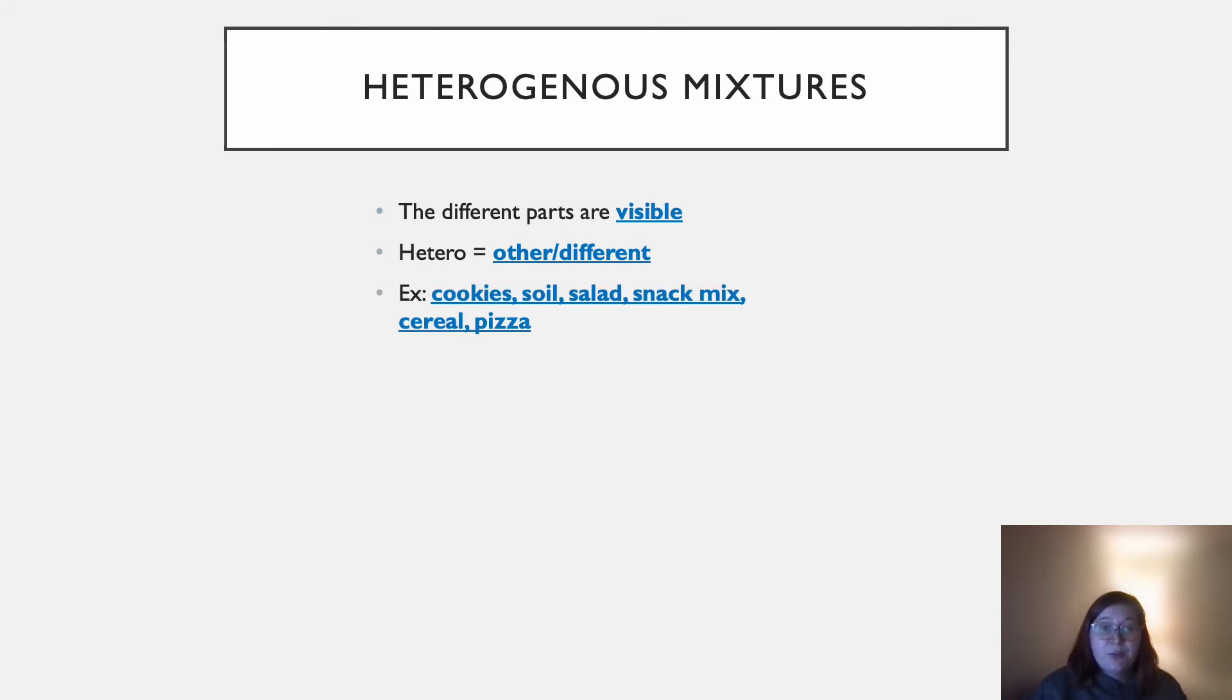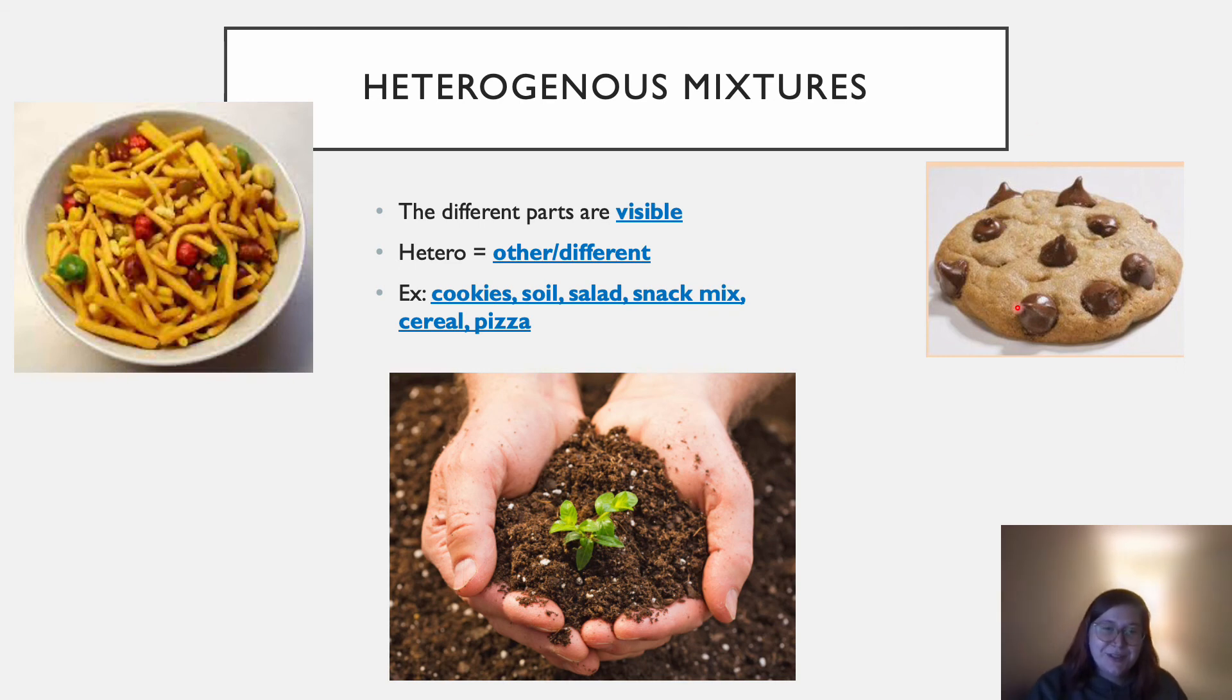So for example, cookies, you can see the chocolate chips in this cookie. Something like soil. If you look closely, you can see that it has little rocks in there, parts of decaying wood or plant. It might have clay, it might have gravel, it might have plants growing in it.